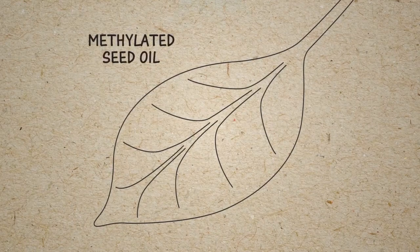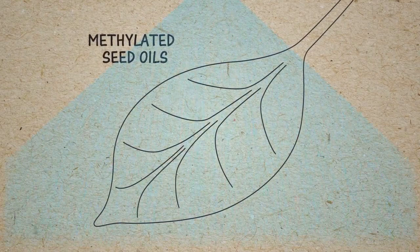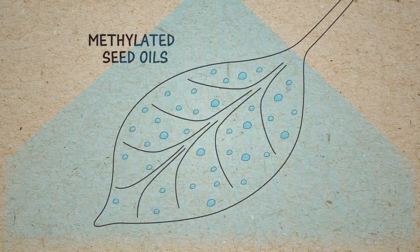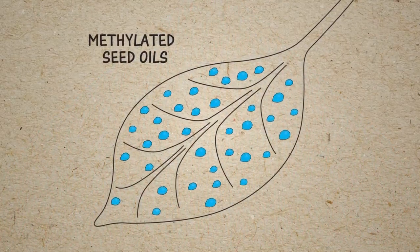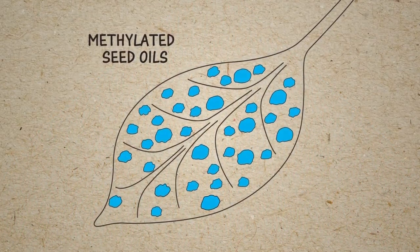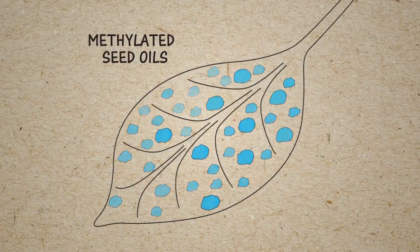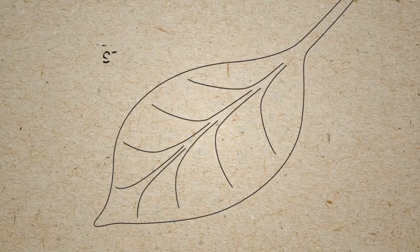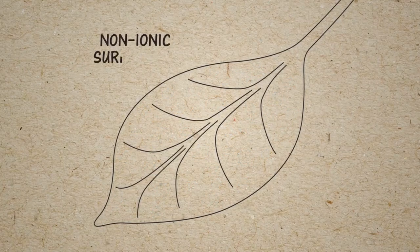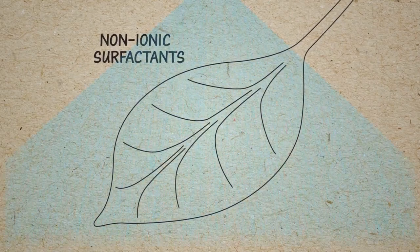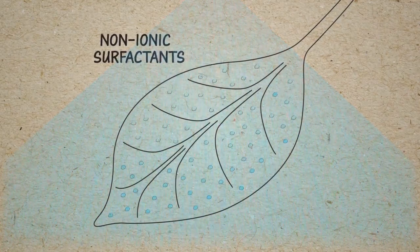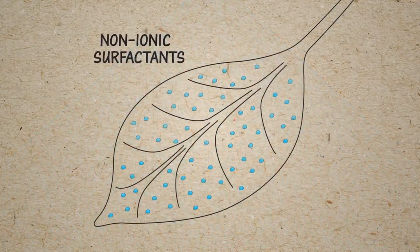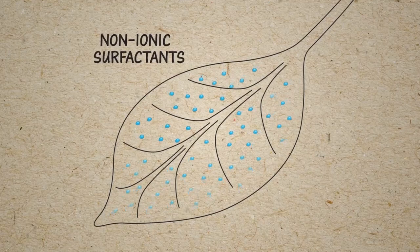Methylated seed oils, or MSOs, are refined oil seed concentrates and act as stickers for foliar pesticides and often spread better than COCs. Non-ionic surfactants, or NISs, are generally inexpensive and are used primarily for wetting and spreading of foliar pesticides.